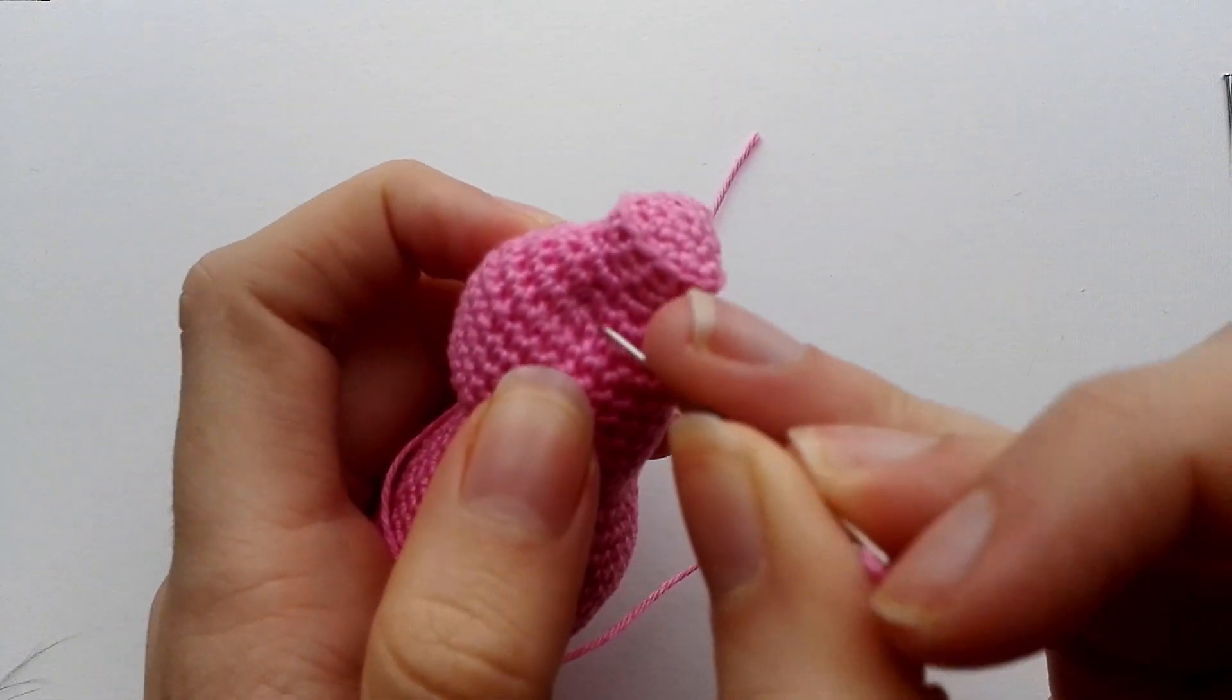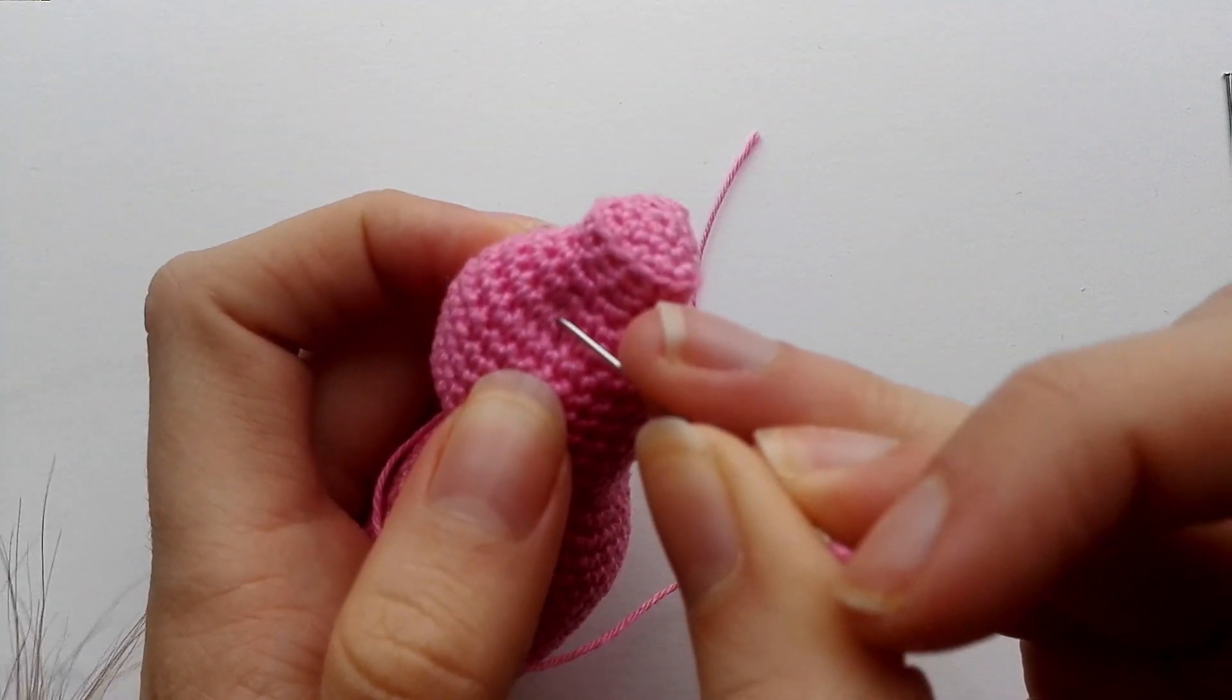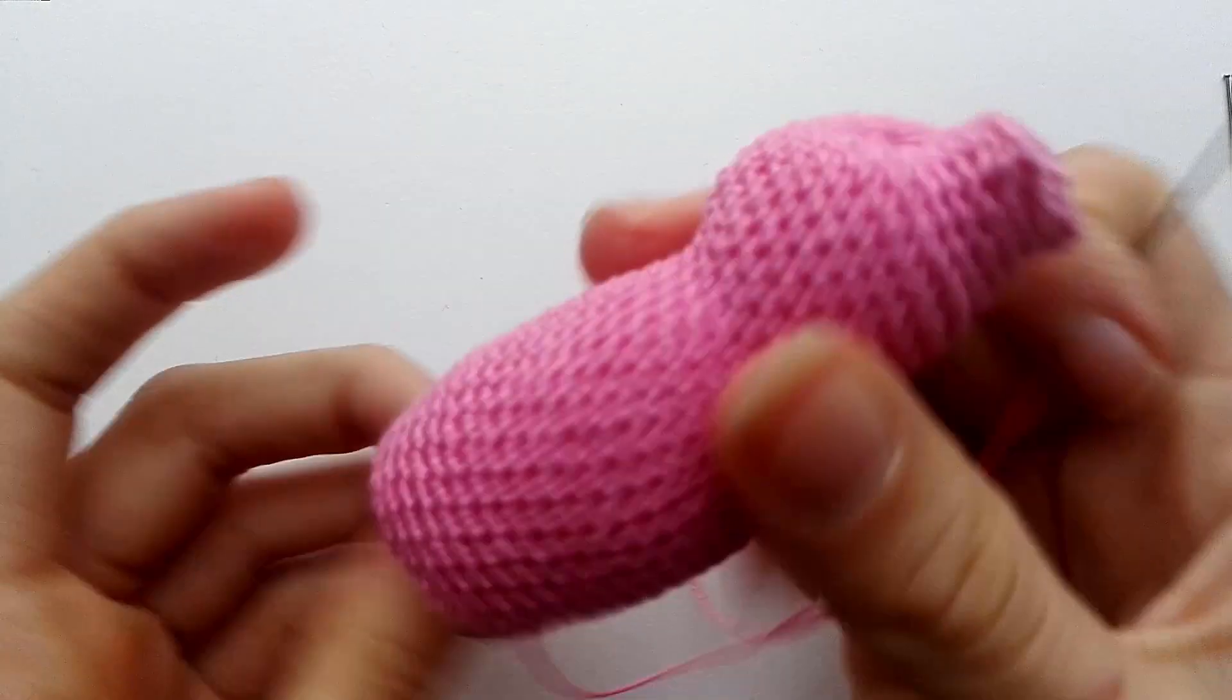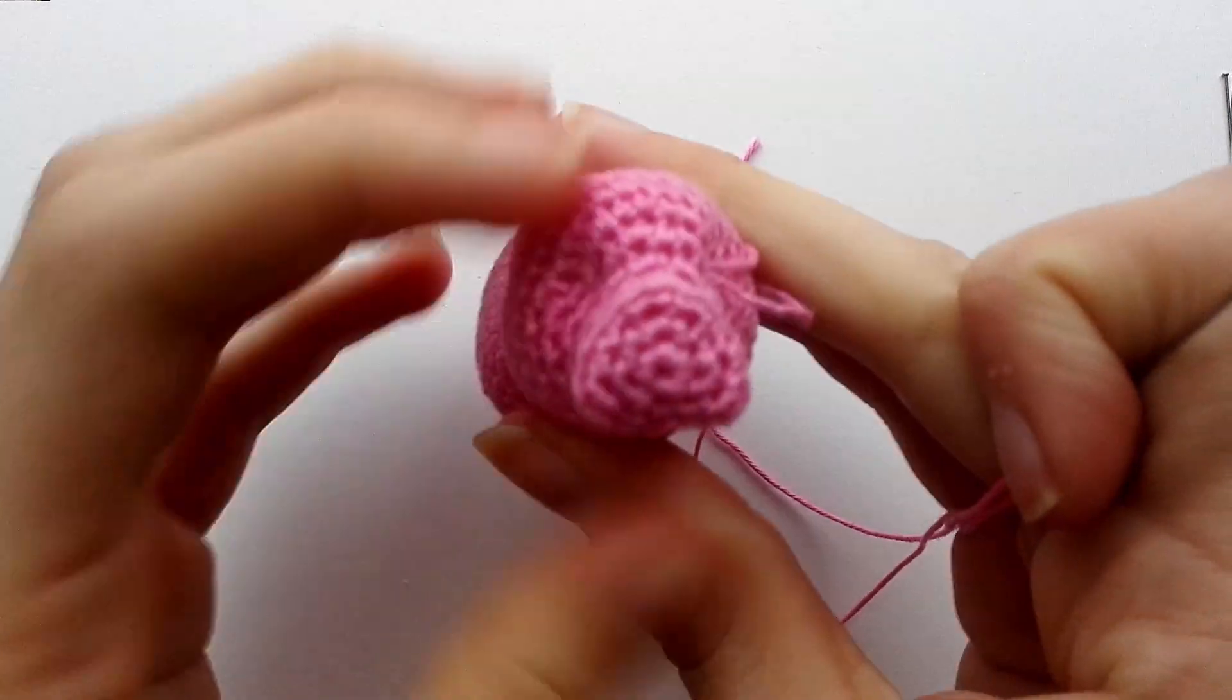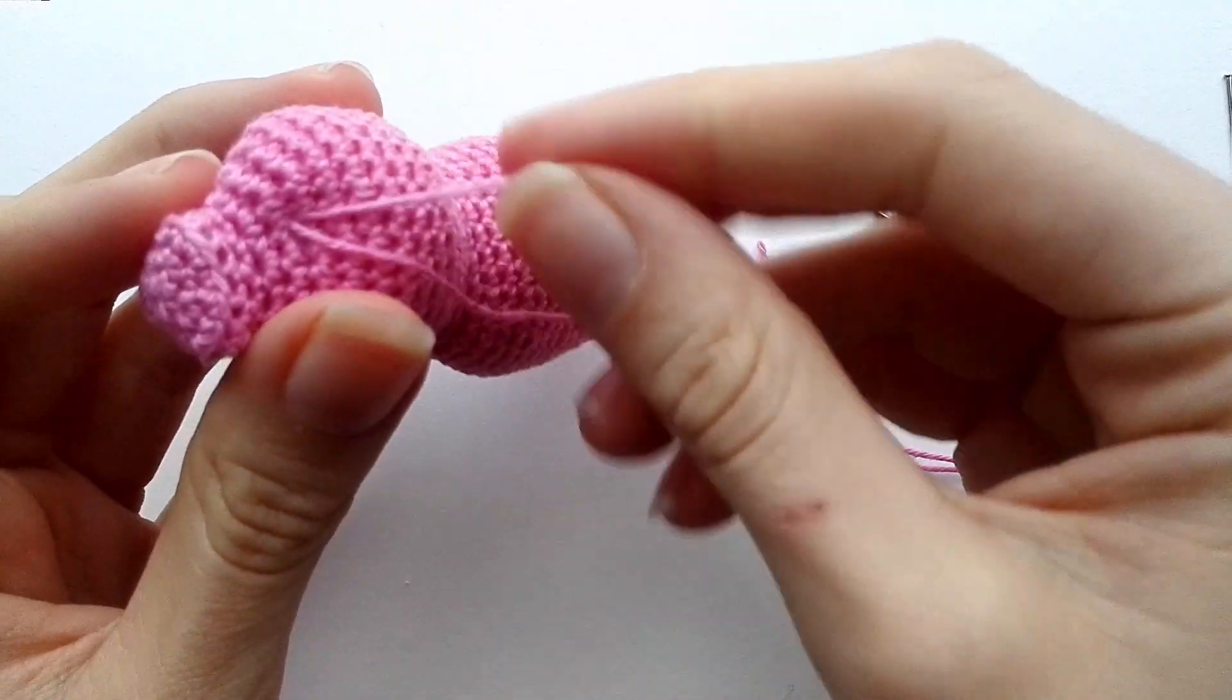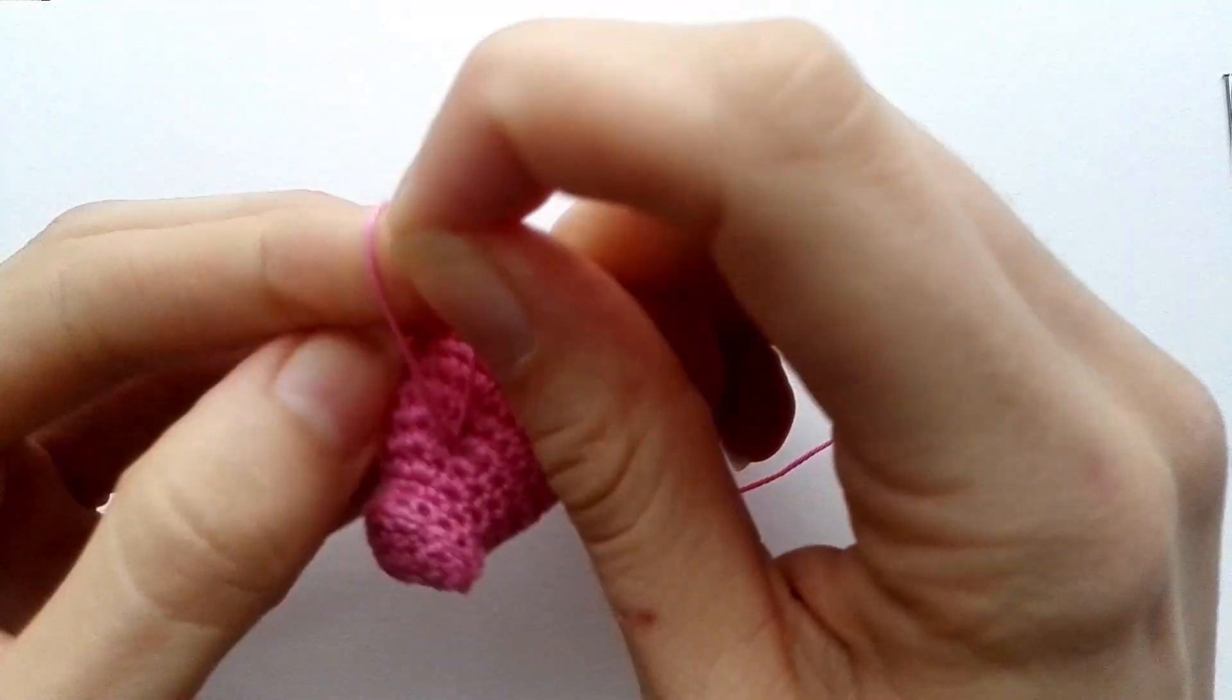So I basically did a little stitch here and then another stitch here. Because with one stitch I didn't really like the shape of the indent so I did another one.